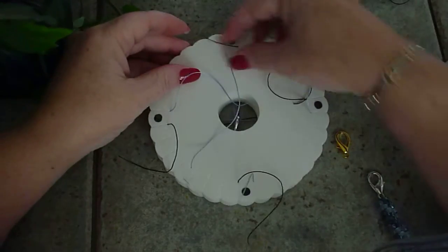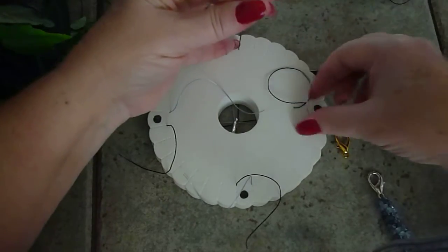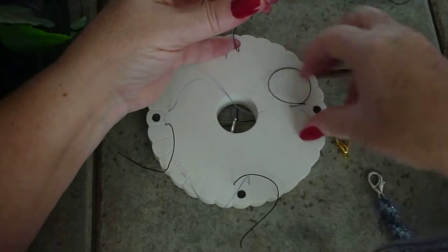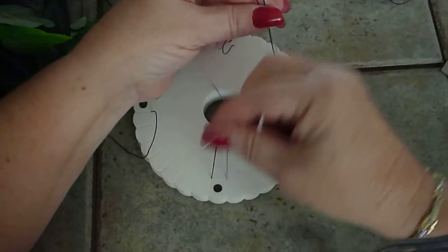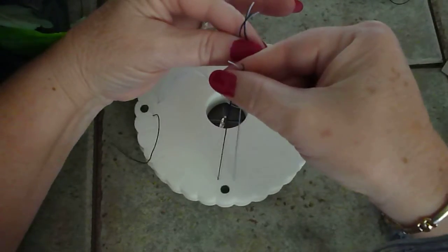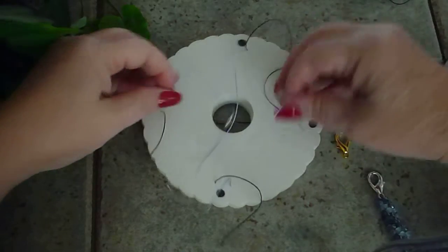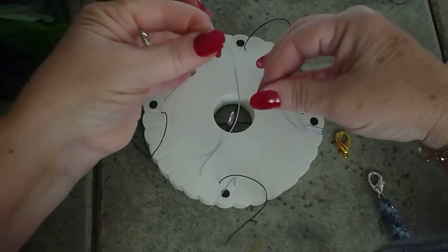So now you have your lobster claw in the middle with your cords. You'll turn it over and just kind of make sure that your cords are pretty much the same length that you haven't pulled one too much. And if so, just adjust it by pulling on it just to center.